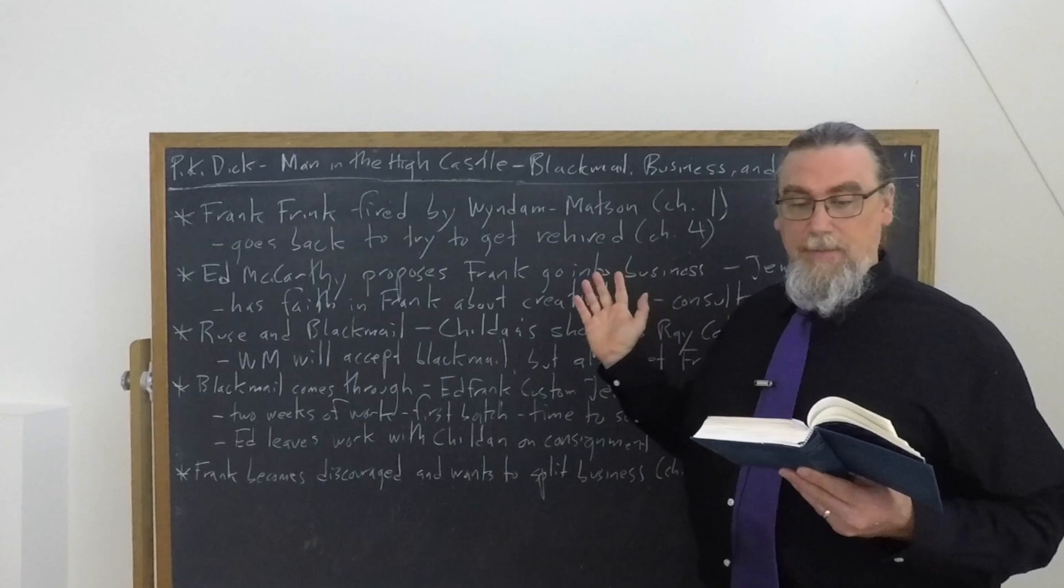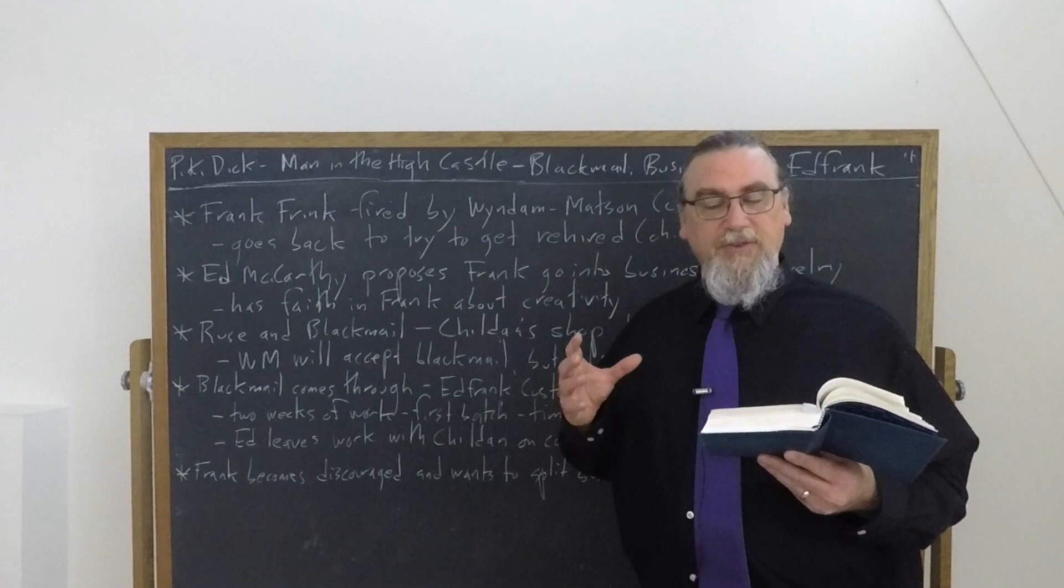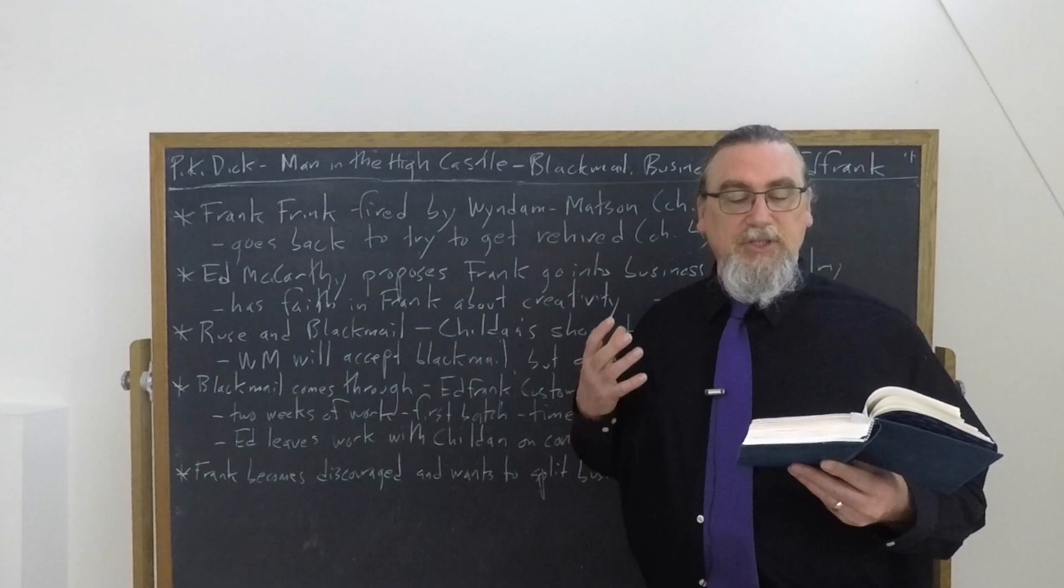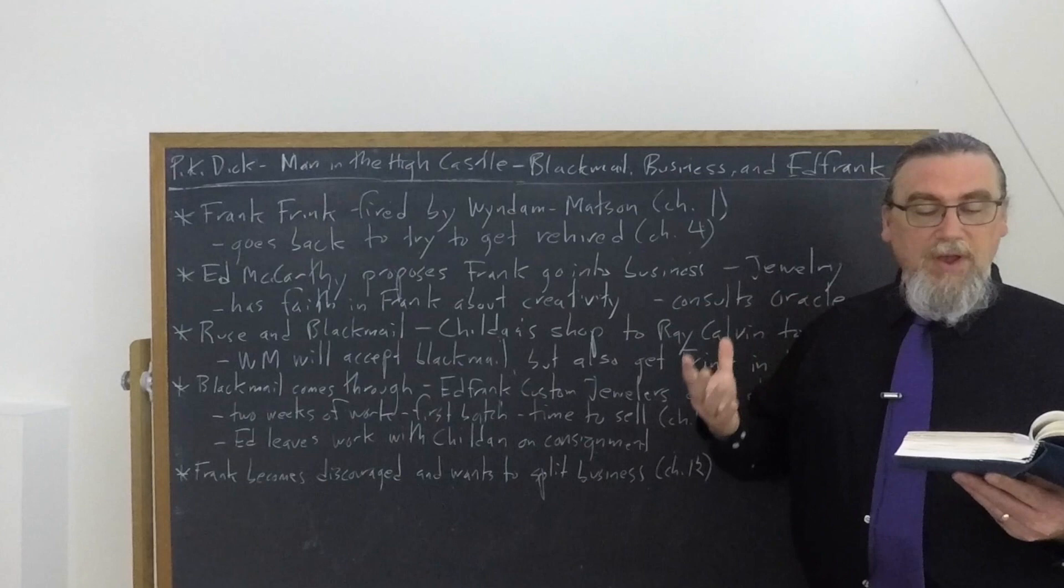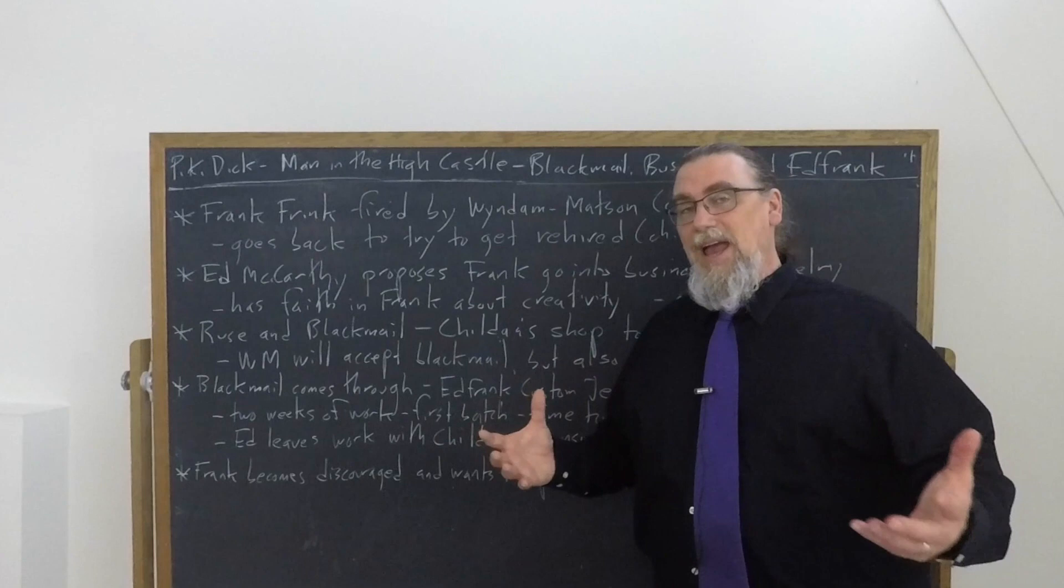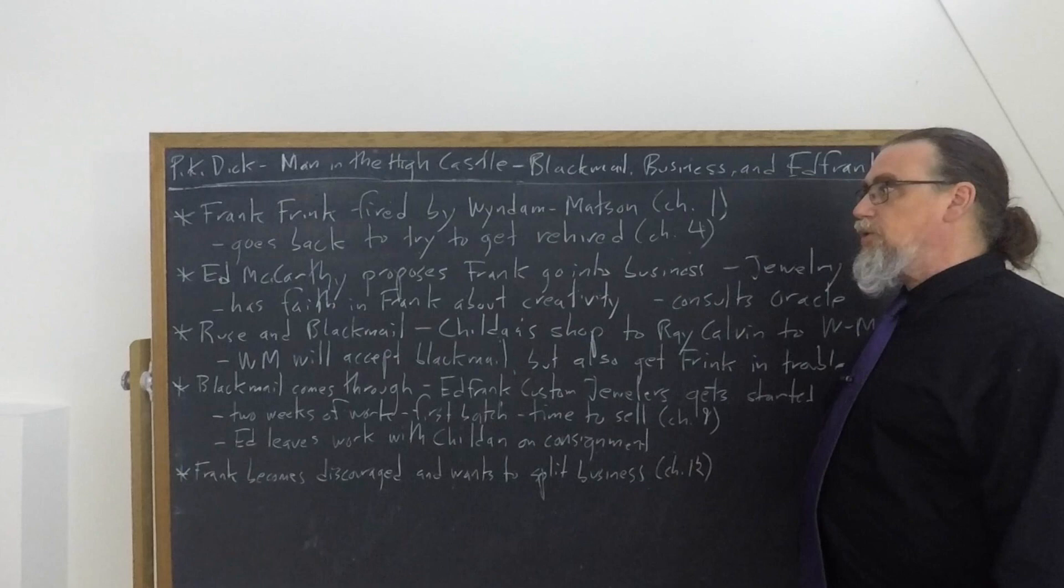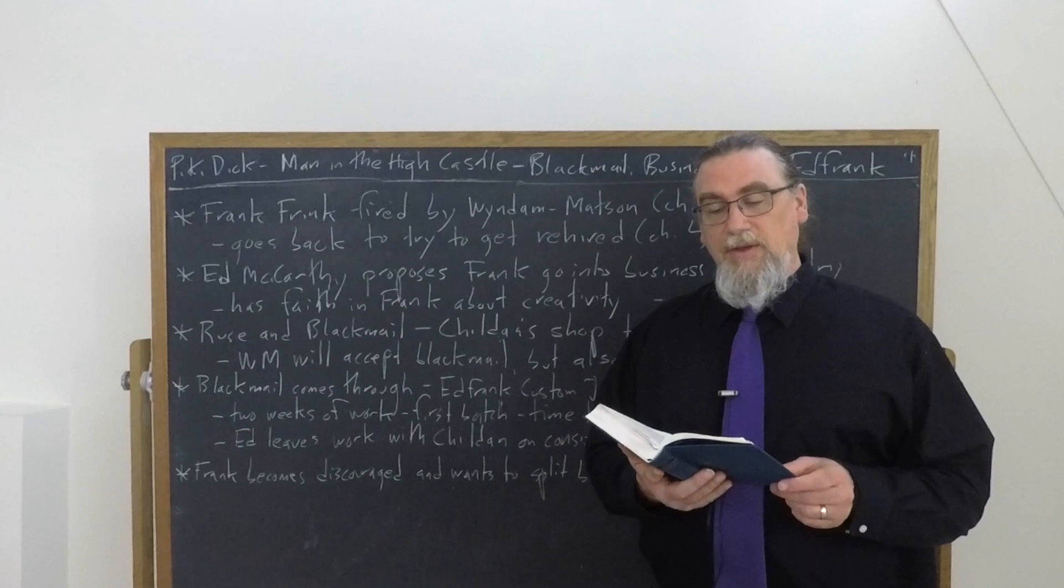He owned controlling interests in a variety of enterprises, speculations, real estate, as well as the WM Corporation factory. So Frank needs to get back in good with him. And what happens? Well, he goes up to him and the old man had stopped by the hairy arm shop foreman, Ed McCarthy. Moistening his lips nervously, Wyndham Mattson said, I'm sorry, Frank, I can't do anything about taking you back. I've already gone ahead and hired someone to take your place. Frank says, I came for my tools, nothing else. His own voice, he was glad to hear, was firm, harsh.